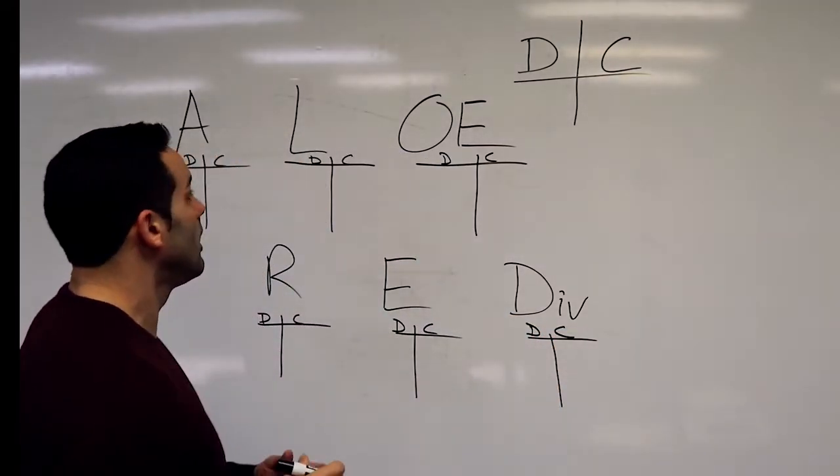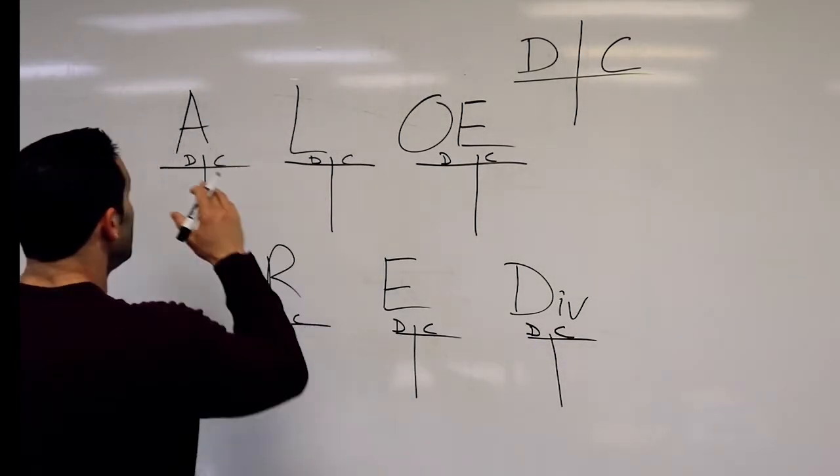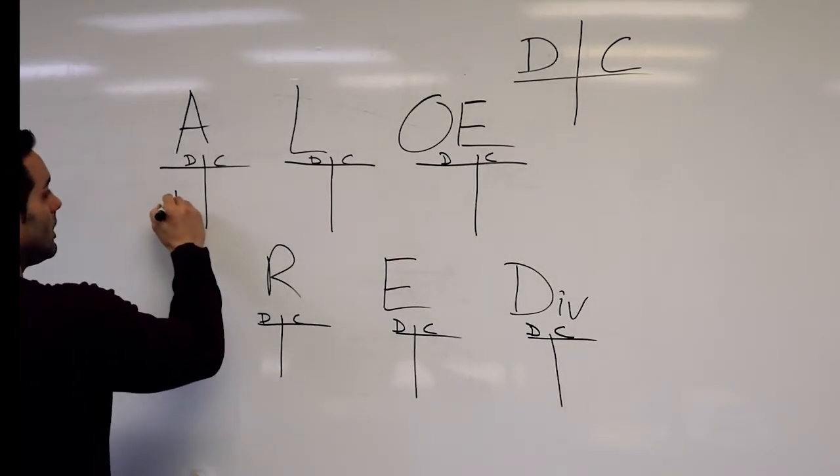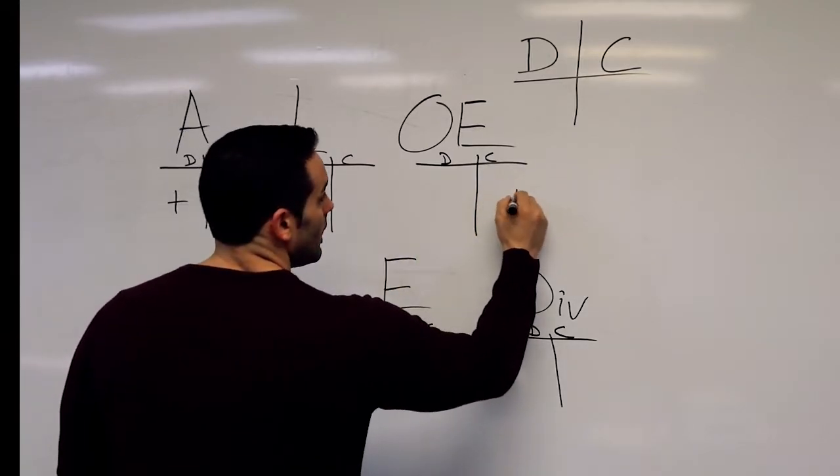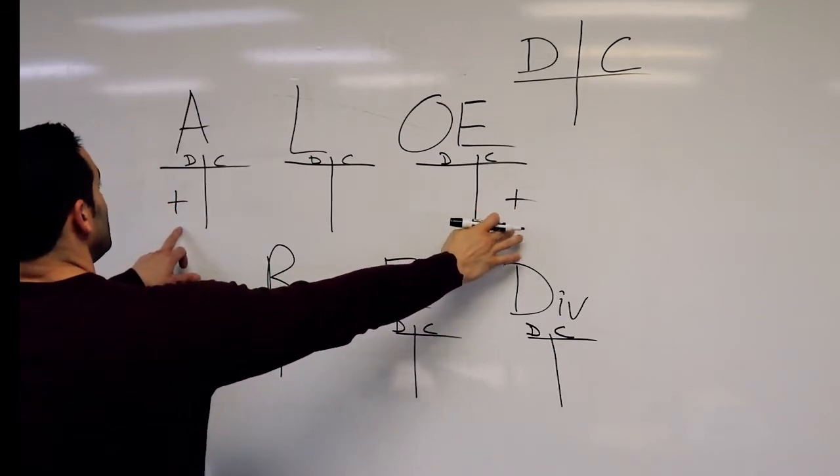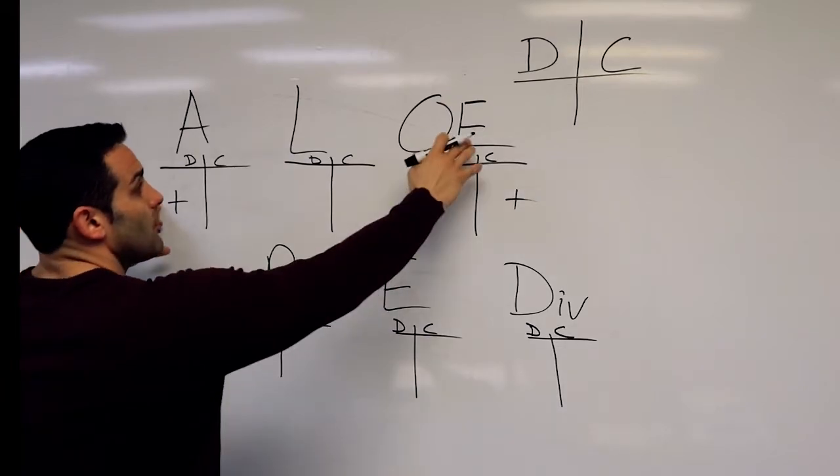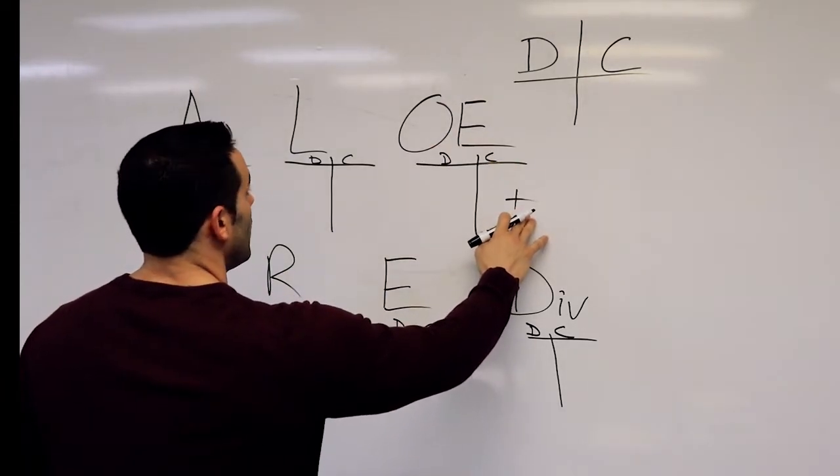And so here's what helped me the most. So assets, let's first, let's put pluses on the outside. First thing we do, put pluses on the outside, because assets are increased with the debit. And equity is increased with the credit.